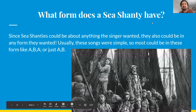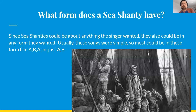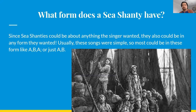So what kind of form does a sea shanty have? Since sea shanties could be about anything the singer wanted, they could also be in any form they wanted. Usually these songs were simple, so most of them could be in a form like A-B-A or just A and B. Remember, when we talk about form, we use letters to identify which sections there are, and we always start with an A. Sometimes we'd go on to a B or a C, but because sea shanties were really simple, they were usually just A-B or A-B-A. And because they're call and response, they would change words in some spots and bounce back and forth, but that still counts as one section.